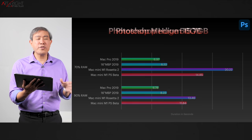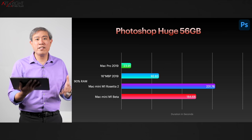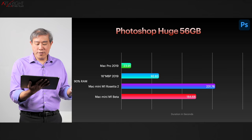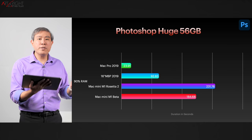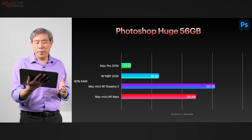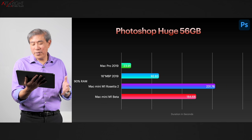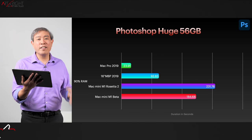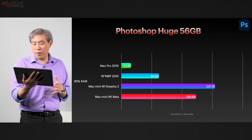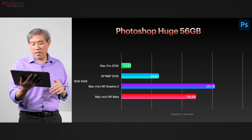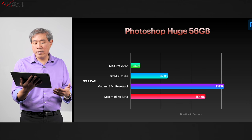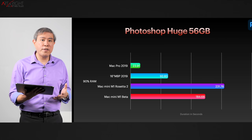The last test is his Photoshop huge test, which creates a 56-gigabyte file. For large files like this, Intel Macs are still supreme. Mac Pro finished in about 23 seconds, MacBook Pro in about 93 seconds — over a minute. The Mac Mini on Rosetta took 231 seconds — a little over four minutes. Running on Photoshop beta, it still takes close to three minutes. So if you're throwing large files at it, the M1 is not quite where we want it to be yet.